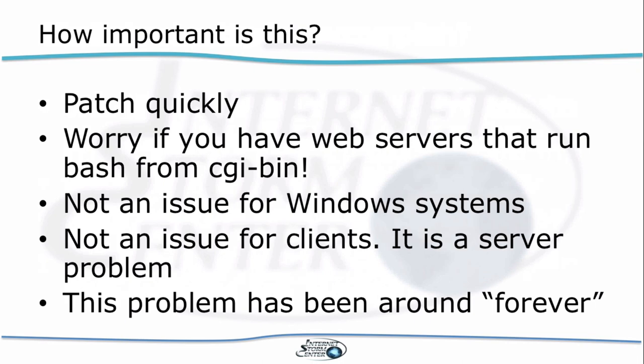This is important — it is critical if you have web servers that run Bash from CGI-bin. At this point, I would almost suggest you go into incident handling mode and don't just blindly patch the vulnerability. It's not an issue for Windows. For clients, you have to be less worried about this other than the DHCP scenario, which could be exploited if you are connecting to a Wi-Fi hotspot — the coffee shop scenario could possibly lead to exploitation.